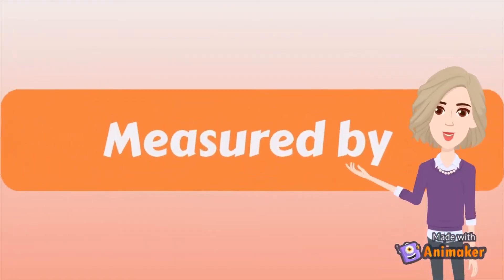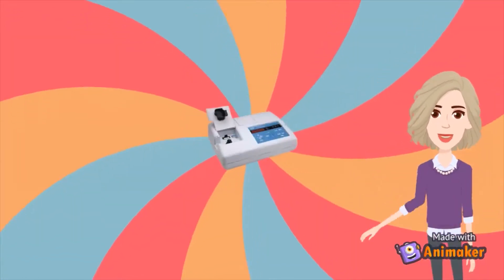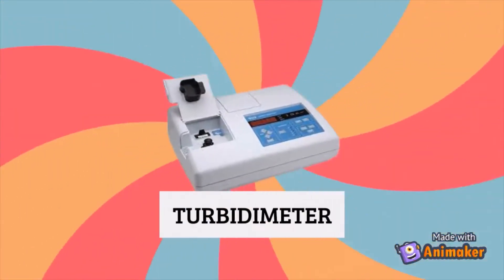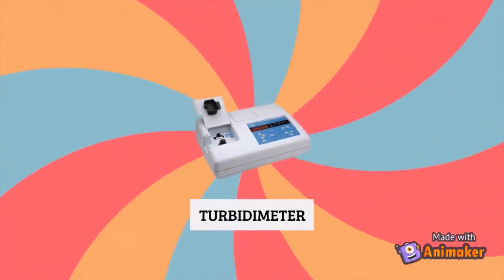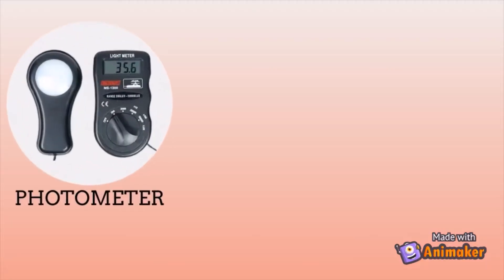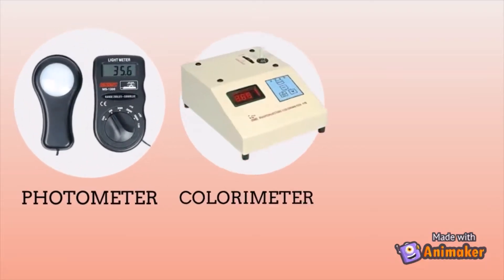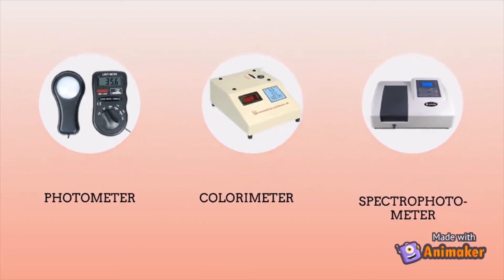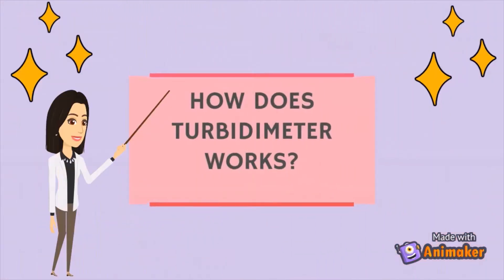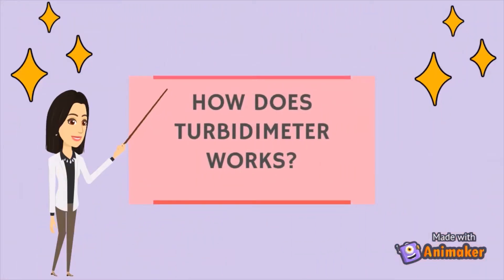This process is measured by using Turbidimetry. Turbidimetry can use any photometer, ordinary colorimeter, and spectral photometer. So, how does Turbidimetry work?